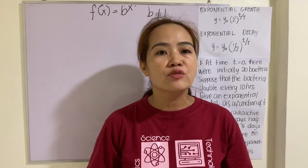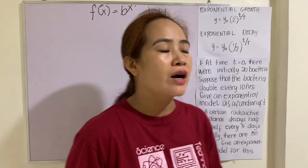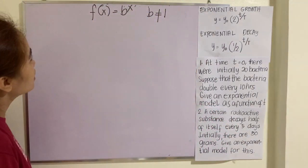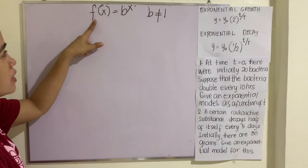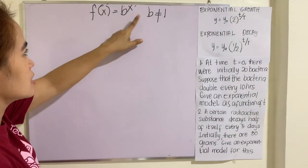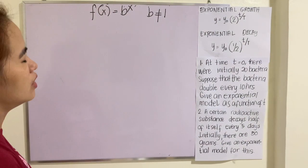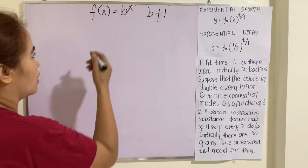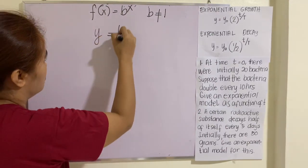Let us define first what an exponential function is. An exponential function is defined by this equation: f(x) is equal to b raised to x, where b is not equal to 1 and b is of course not equal to 0. So this is y equals b raised to x.